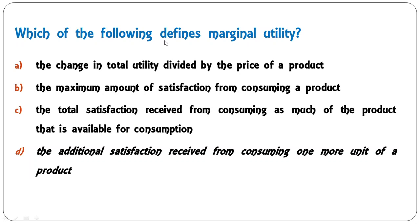Next: 'Which of the following defines marginal utility?' — the change in total utility divided by price; the maximum satisfaction from consuming a product; the total satisfaction from consuming as much as available; or the additional satisfaction from consuming one more unit of a product? D is the correct answer: the additional satisfaction received from consuming one more unit of a product.